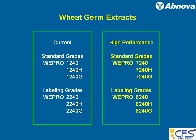I'll explain how D, H, and G grades are differentiated. For labeling purposes, like in NMR, you may want to selectively label your protein or label all amino acids. We have a special wheat germ extract from which amino acids have been removed, and we call it the 2240. We have a general purpose 2240 H and G grade.